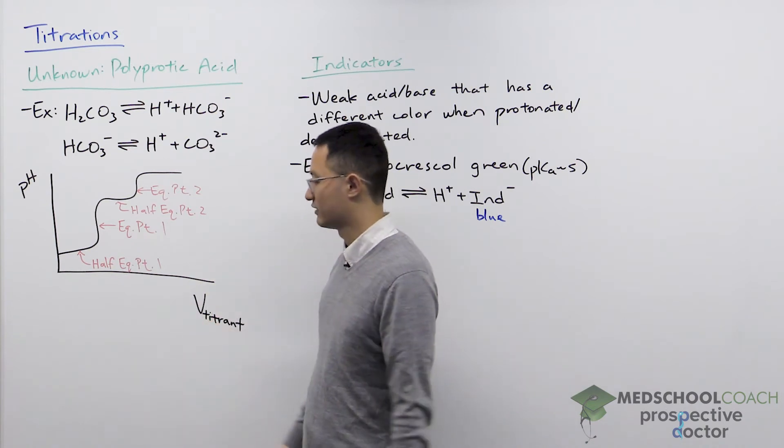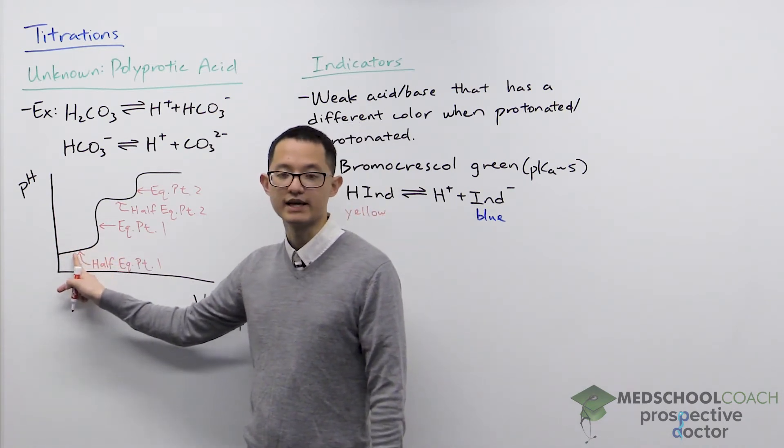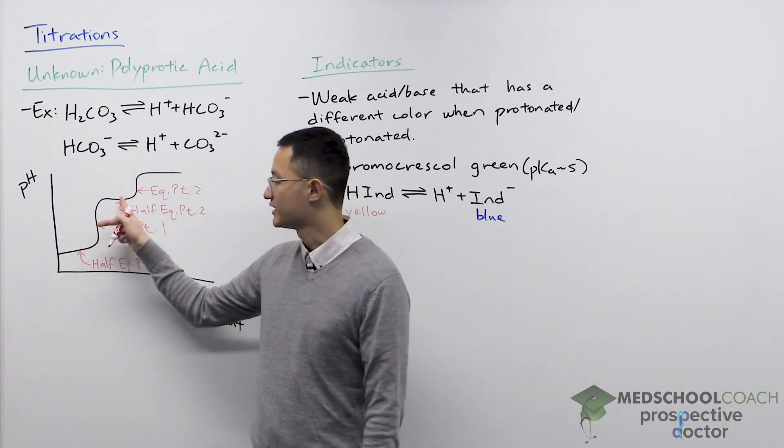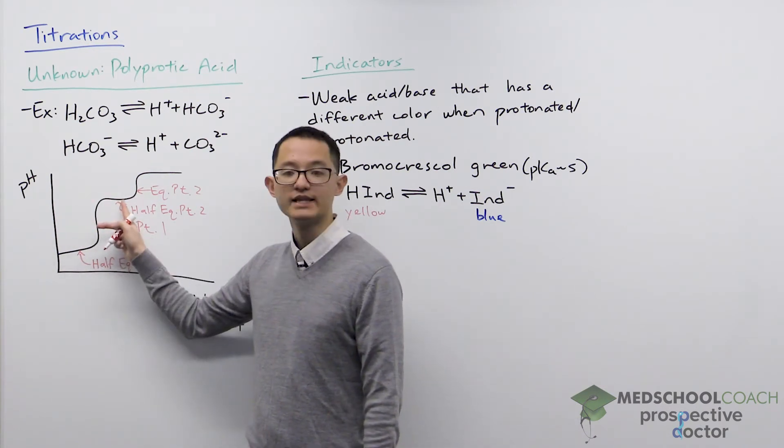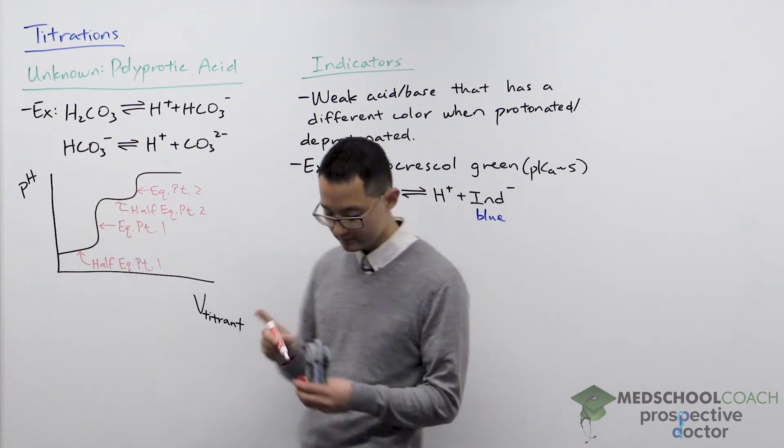So that would for instance tell you that this pH value right here, this is the pKa of carbonic acid. And this pH value over here, this is the pKa value of bicarbonate.